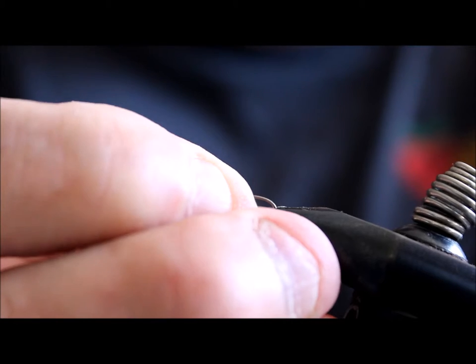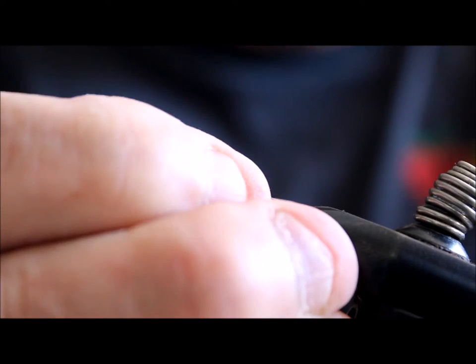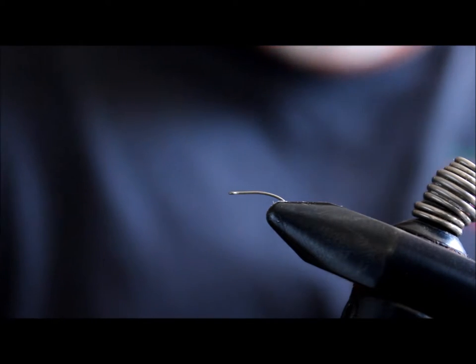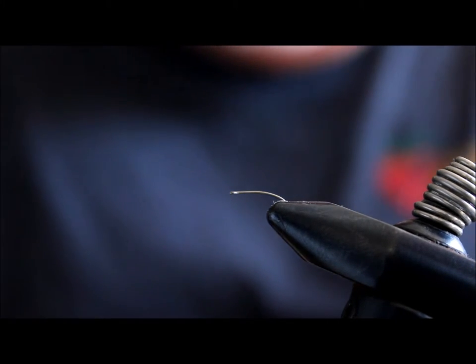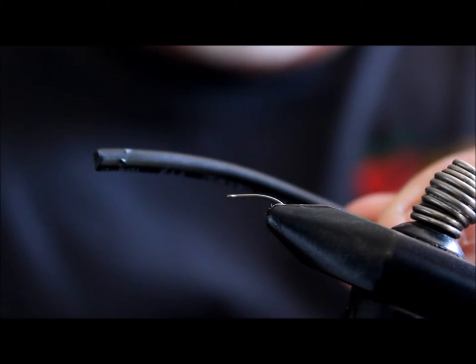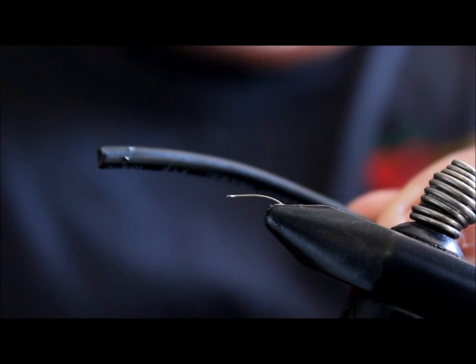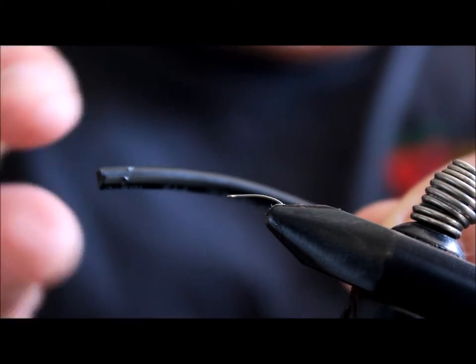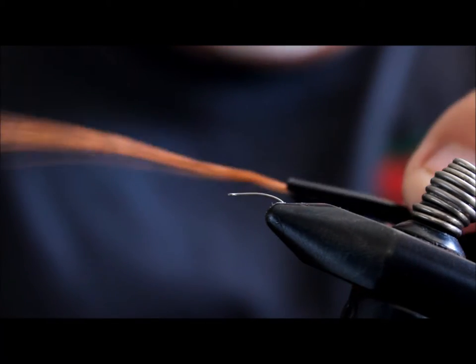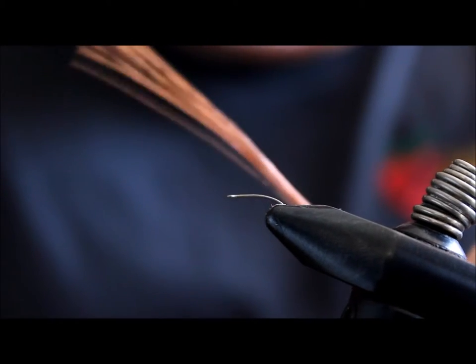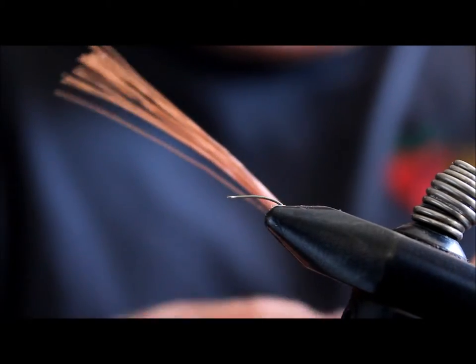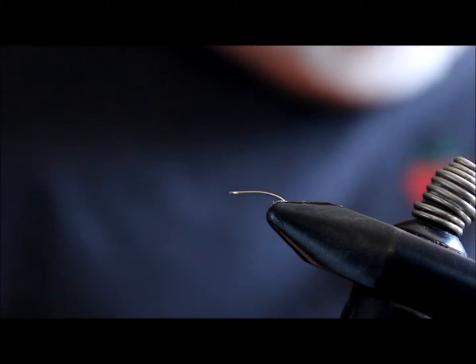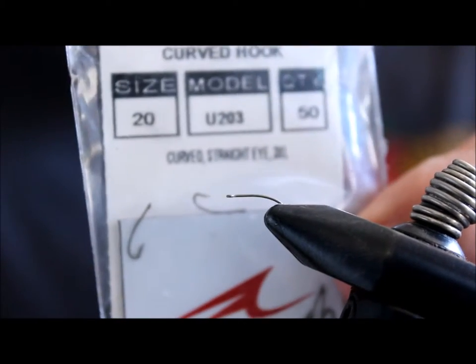The next fly is a brassy, using a particular material. I got a household appliance cord we were throwing away. I salvaged the extension cord, stripped it, and I'm going to use one of those little copper wires as the abdomen material. The hook I'm using is like a 200 R. This will be my abdomen material.